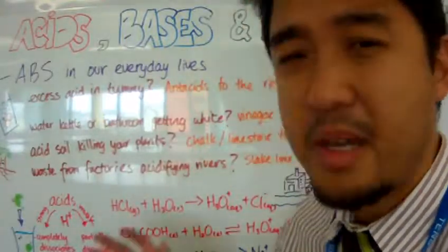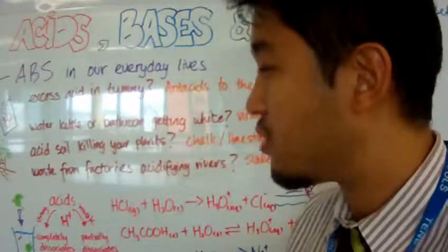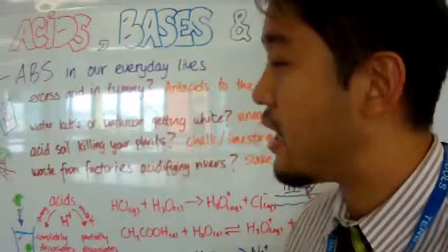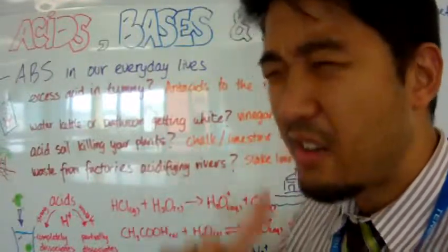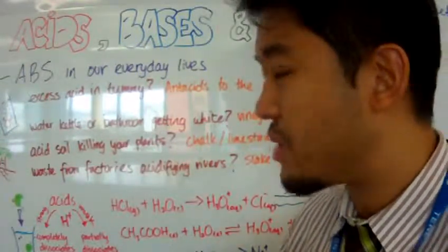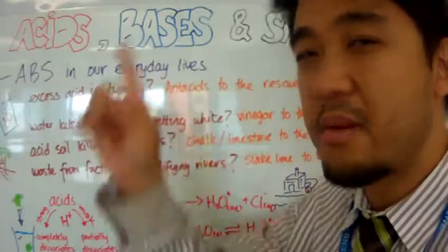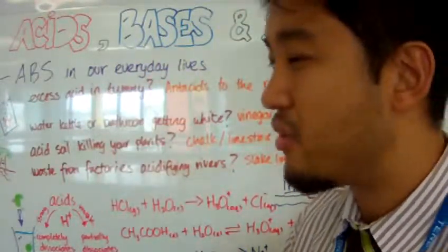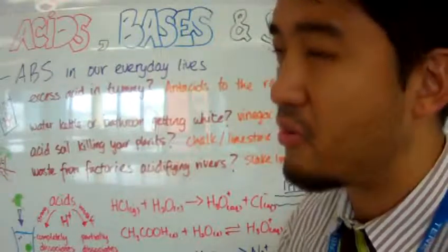Alright, so chalk and limestone are basically base and you can use that to neutralize the acid in the soil. Now, why would you use an alkaline? Well, number one, because alkaline gets washed away when it rains. And number two, your soil pH will go way above 7. So it's not neutralizing the soil, but it's making the soil very basic, which is also not good for plant growth.